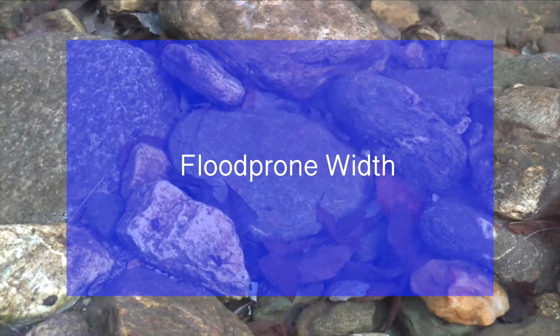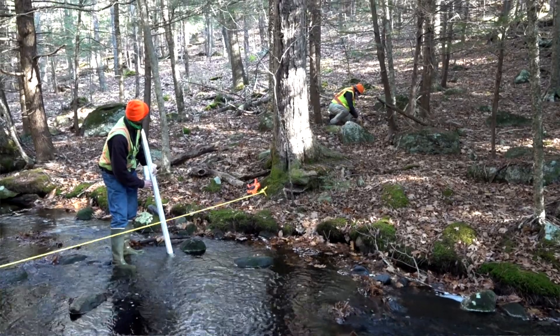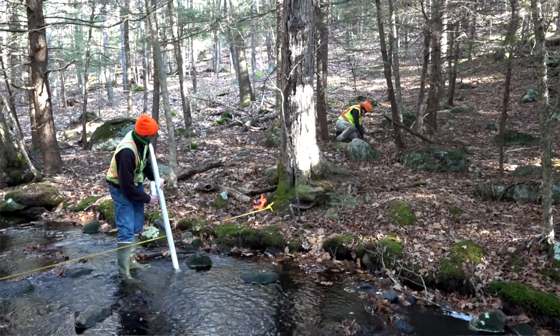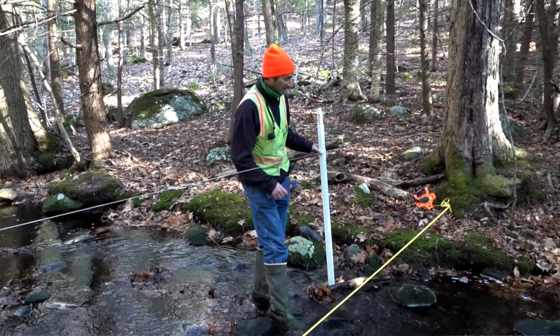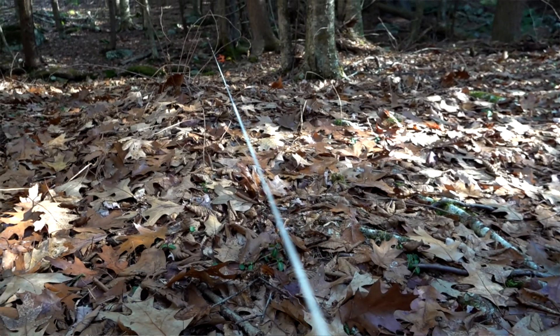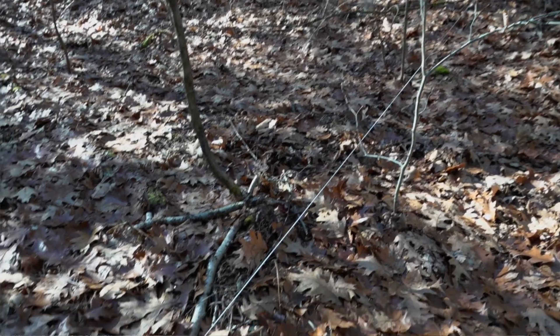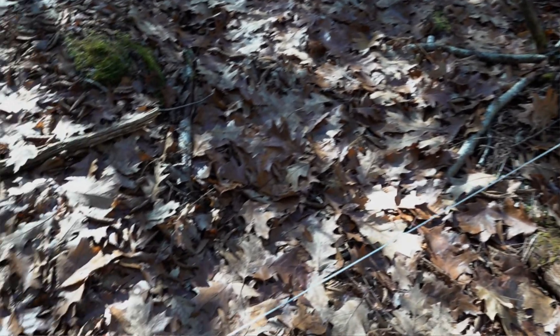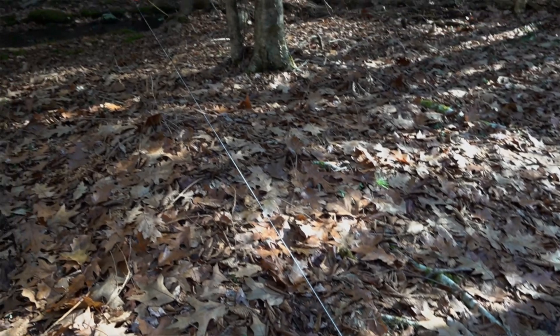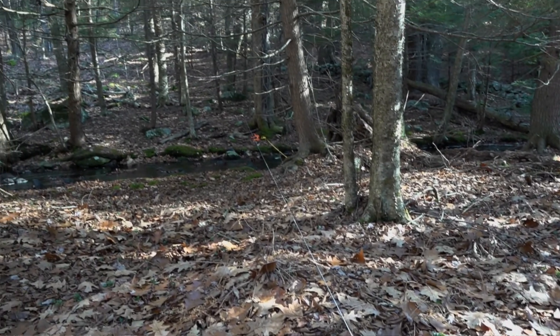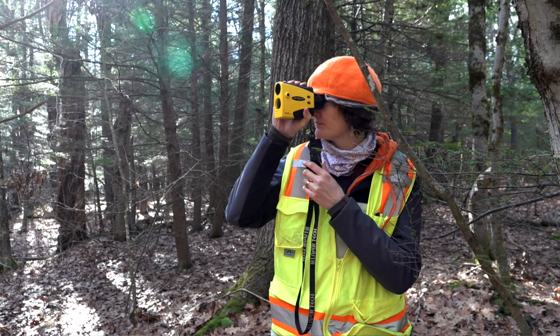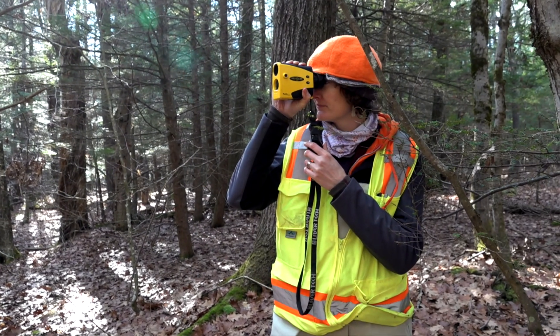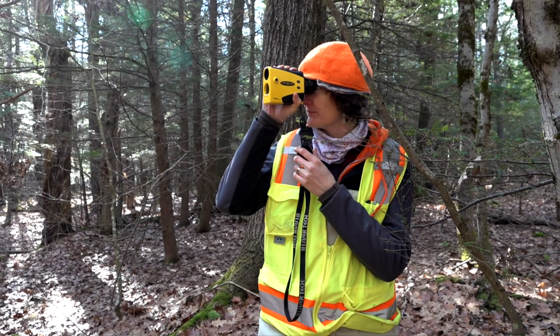The other variable we typically look at when measuring cross-sectional dimensions is the flood-prone width of the channel. Flood-prone width is the width at which the flood would spread out at two times the maximum bankful depth. When measuring bankful dimensions, you'll often spread a string or tape measure, level it off at twice the max bankful depth, and see what the width is. Sometimes this is done with a rangefinder, survey, aerial imagery, or LIDAR contours in the office. This gives you the flood-prone width.